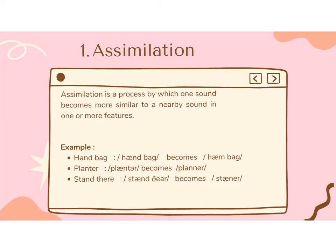Number one: assimilation. Assimilation is a process by which one sound becomes more similar to a neighboring sound in one or more features. For example, handbag becomes hembag, planter becomes planar, and standar becomes stanner.